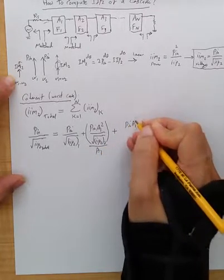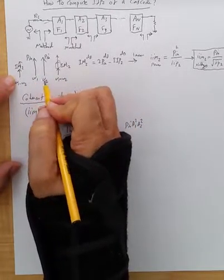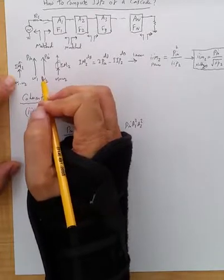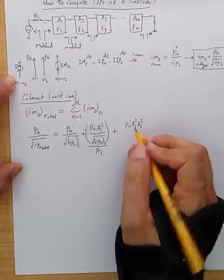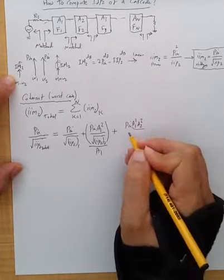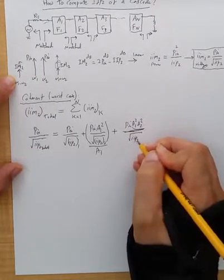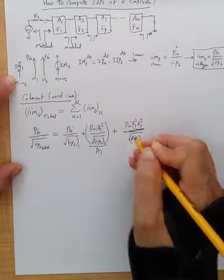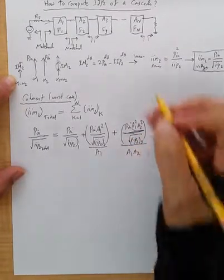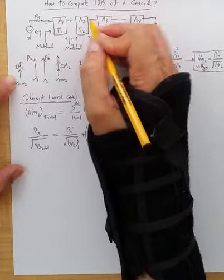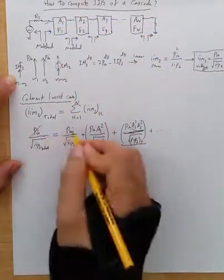Plus Pn, A1 squared, A2 squared, that is the applied omega 1, omega 2 tones that would be at the input of the third stage. So they should be multiplied by this scalar, divided by IIP2 of third stage, and the whole thing should be divided by A1, A2, because we need to transfer them to the input of the first block, and so on.